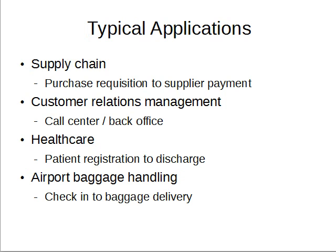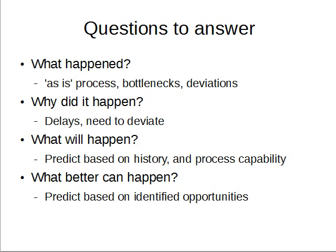Process mining can answer several typical questions. The first question is: what happened? The discovery of the as-is process is a commentary on the current state of affairs. This will also highlight the bottlenecks formed and the deviations that occurred. The next question is: why did this happen? From an understanding of what happened, where exactly it happened, and what time it happened, we can much more easily understand why it happened. Where was the largest amount of delay? What was the need to deviate? These kinds of questions can always be understood.